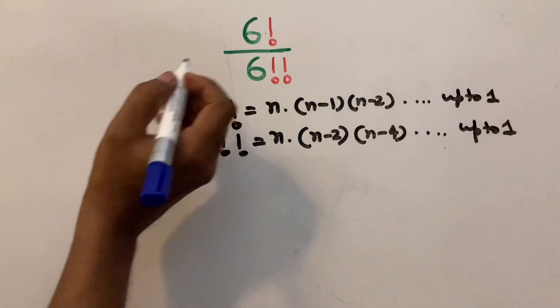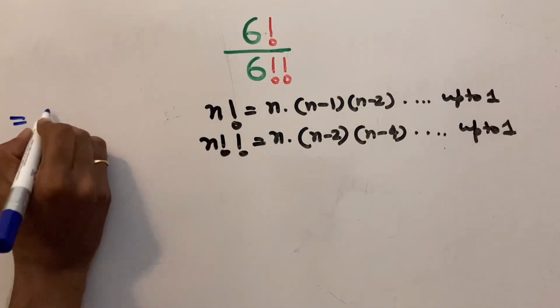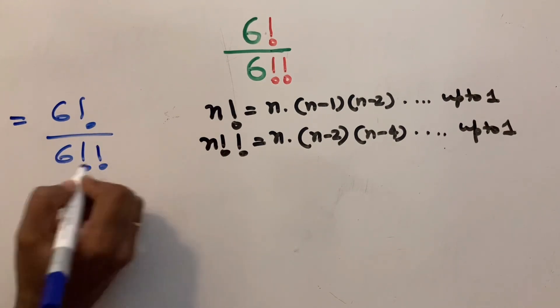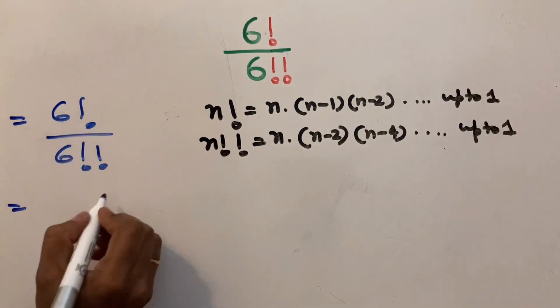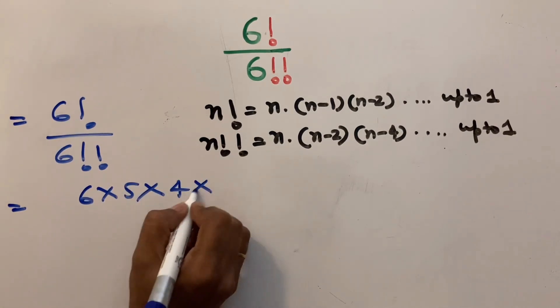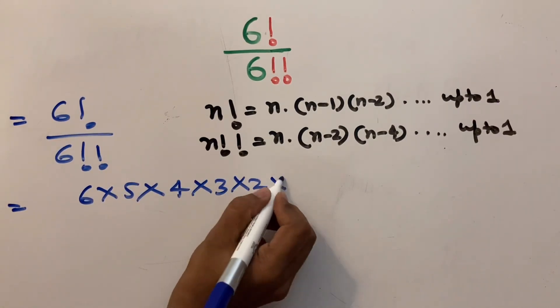Therefore this problem simplifies to 6 factorial divided by 6 double factorial. This comes as 6 factorial is 6 multiply 5 multiply 4 multiply 3 multiply 2 multiply 1.